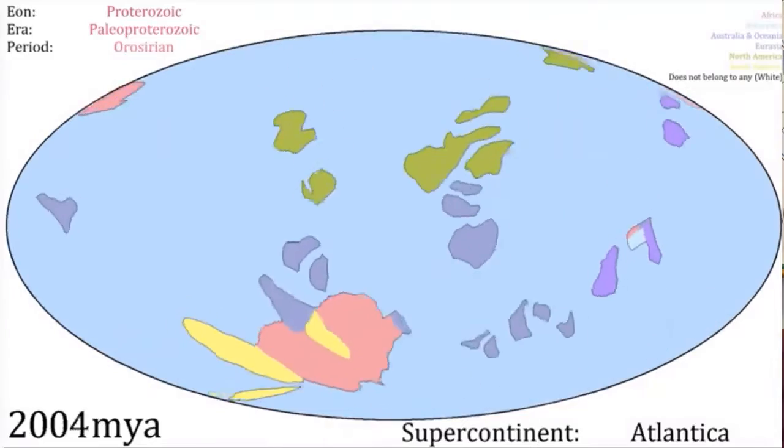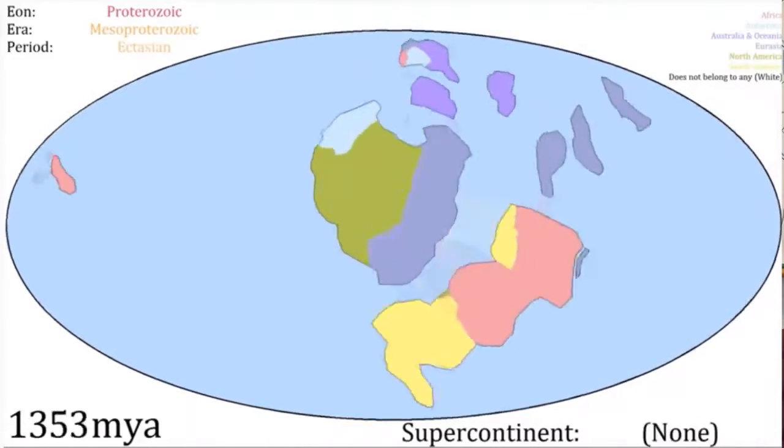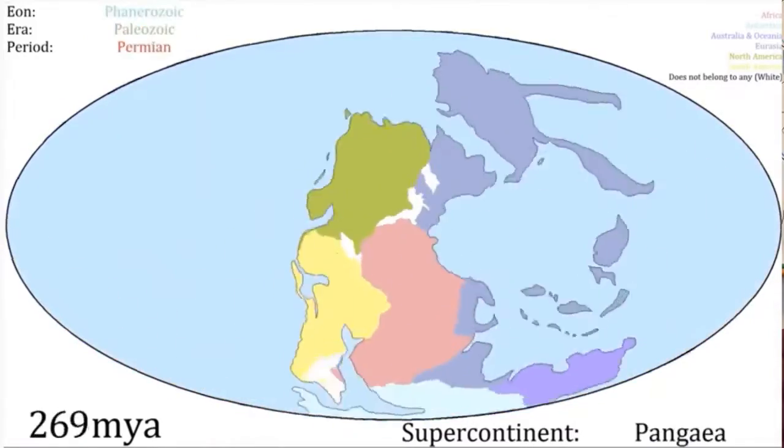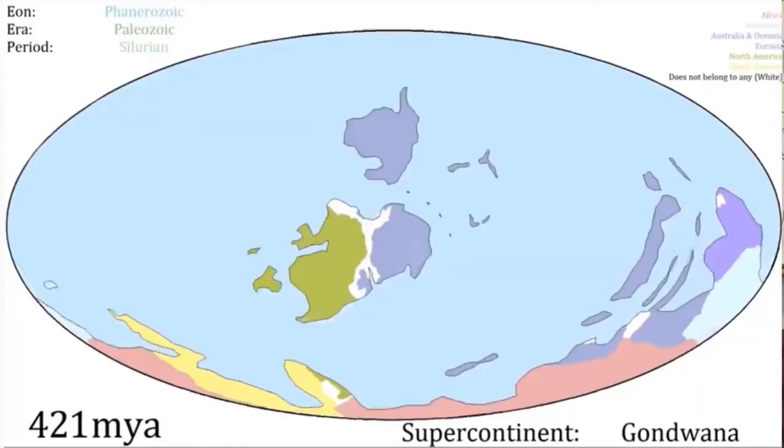Another way Earth's environments can change is through tectonic plates moving. They move together over long periods of time and can form supercontinents, which can affect the albedo and the reflection of solar radiation on that surface. At the end of the Ordovician, the supercontinent Gondwana was positioned around the South Pole, which led to the formation of massive ice sheets that reflected a lot of solar radiation. This caused a massive cooling of the whole planet and sea levels dropped, meaning over 60% of marine species died because they lost their habitat.